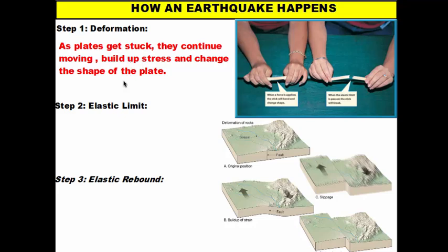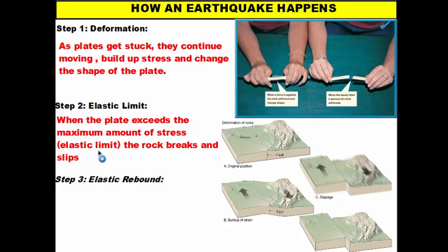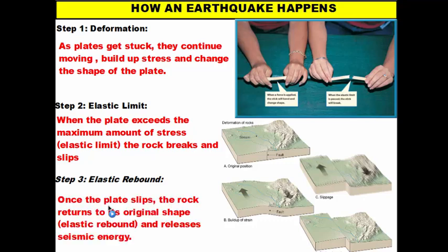Deformation is basically a change in the shape of the plate. When plates get stuck and continue to move and push, they build up stress and change their shape. As stress builds up, the rock can only withstand so much before it breaks — like inflating a balloon, you can only put so much air in before it pops. The elastic limit is the maximum stress the rock can withstand before it breaks and slips. Earthquakes happen when you exceed this limit. The energy is then released in a process called elastic rebound, which occurs once the plate slips and the rock snaps back to its original shape — that's when earthquake waves are released.